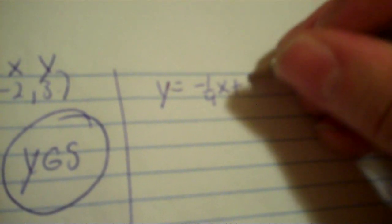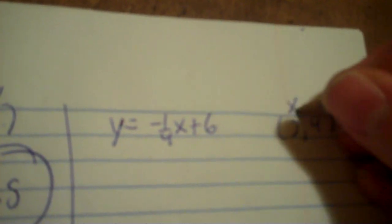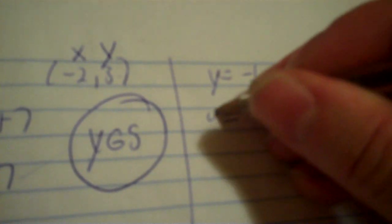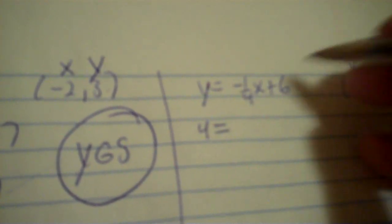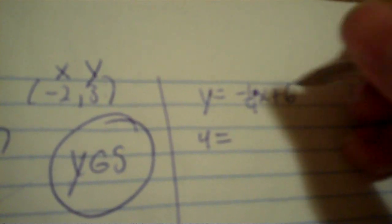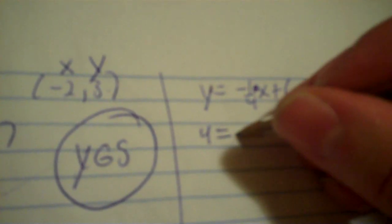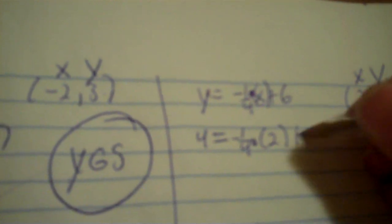Okay, next problem. Y equals negative 1 fourth x plus 6. 2, 4. It's always x here, y here. Put the 4 in for y and don't do anything else over there. You have no operations on this side. All the operations are here. You've got times and plus. So negative 1 fourth times. Remember, parenthesize the letter when you're going to put a number in. Parentheses 2 plus 6.